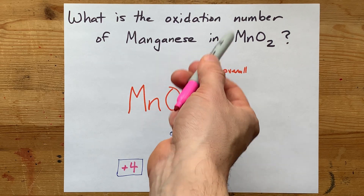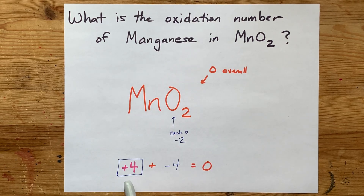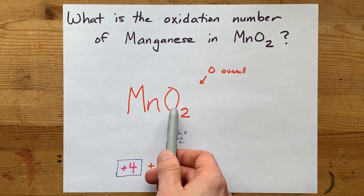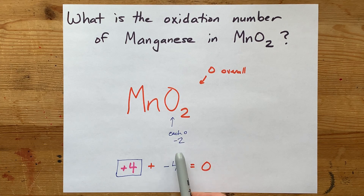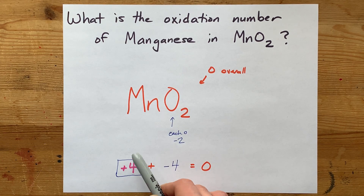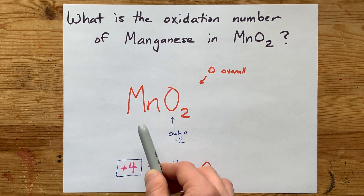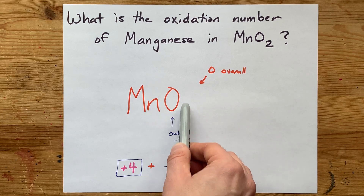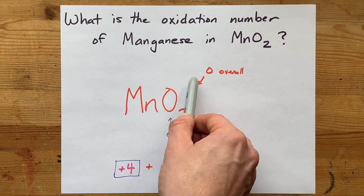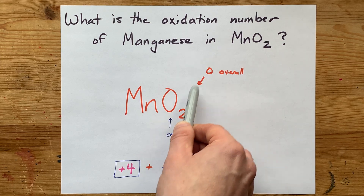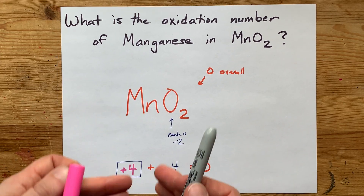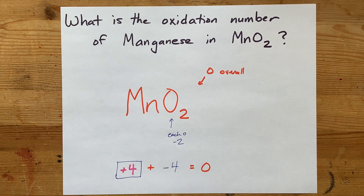The oxidation number of manganese in MnO₂ is positive four, because each of the O's is minus two and there are two of them, which contributes minus four. Mn has to be plus four in order for all the oxidation numbers of all the atoms in this particle to add to the charge on the particle, which is zero. Good job. Thanks for being with me, and best of luck.